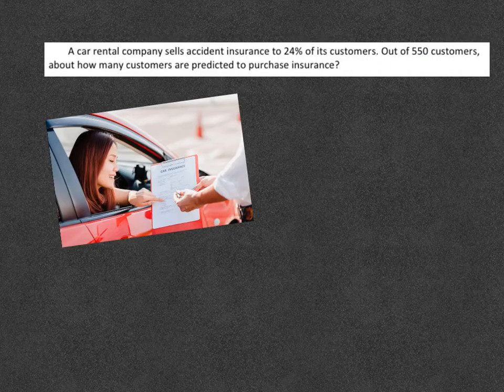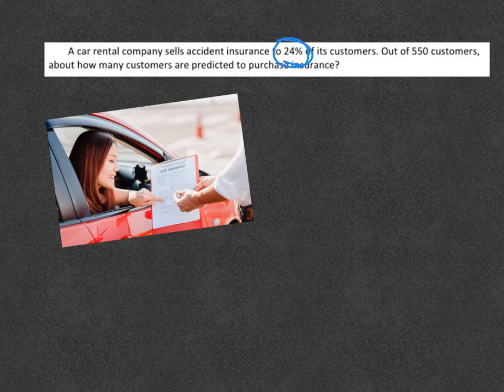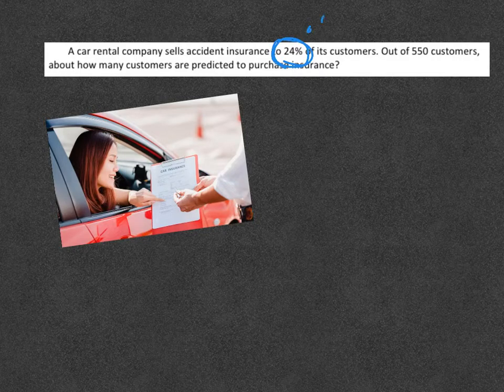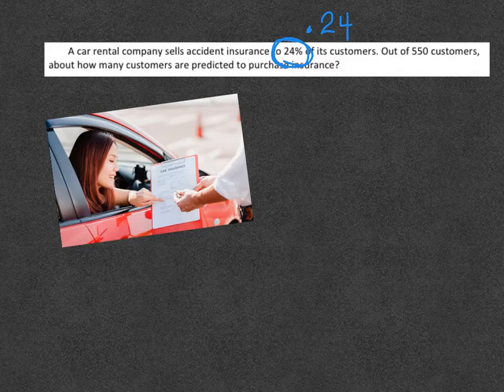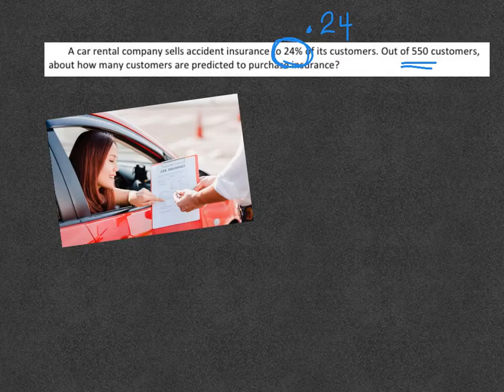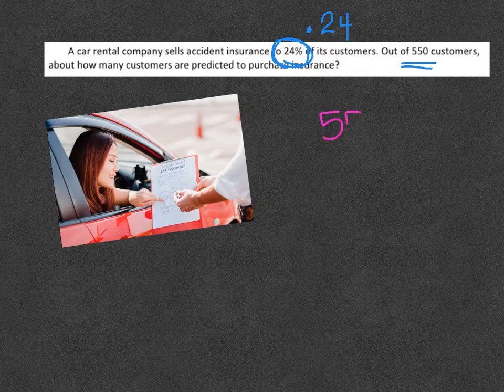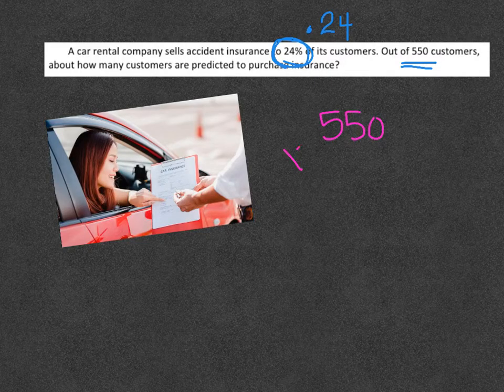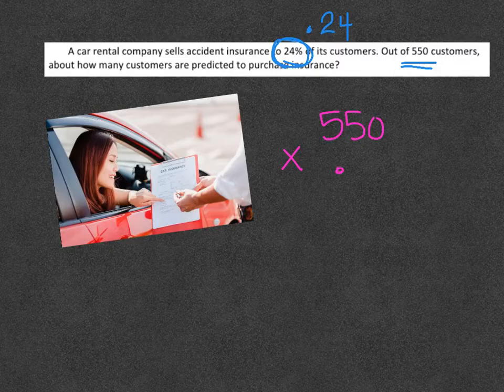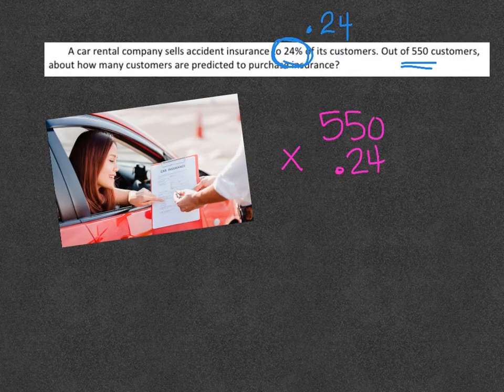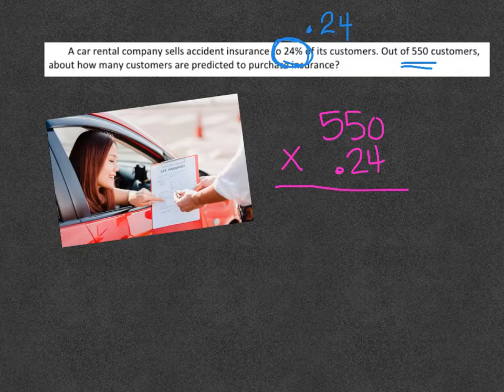Thinking back to that last slide I just showed you, I'm going to take the percent, I'm going to turn it into a decimal, and then I'm going to times it with the total. So 550 customers total. 24% of them are going to buy insurance. I'm going to make that a decimal. When I work this out...